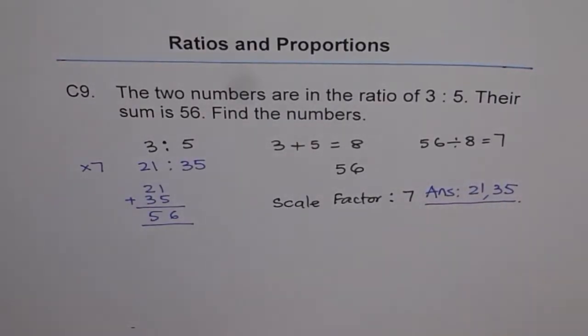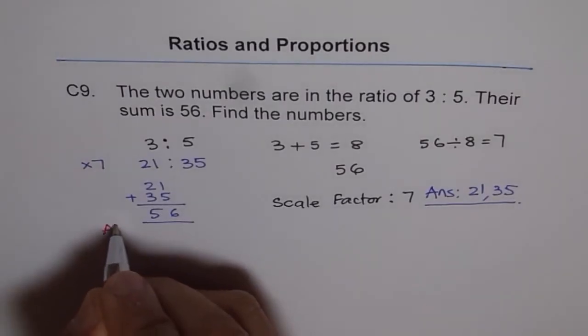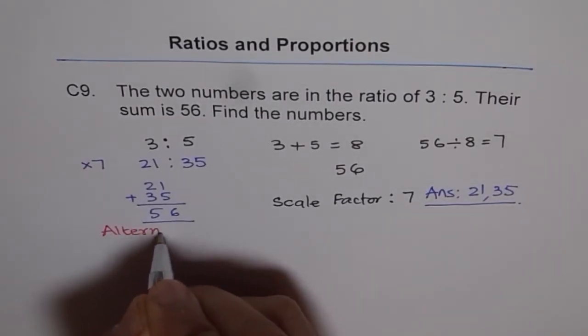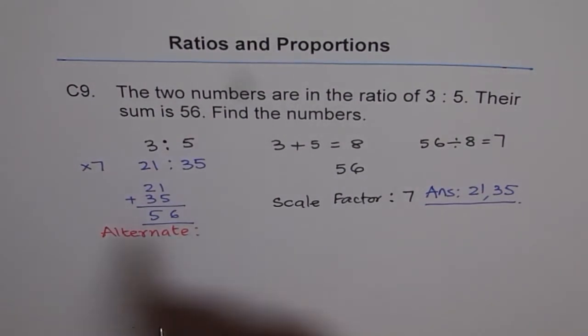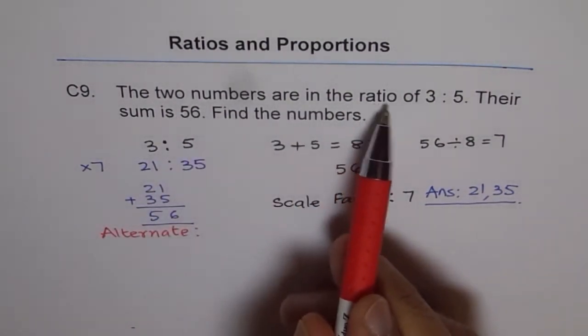So this is one way of solving. Now let me give you an alternate way of solving. Another way of solving the same question would be when we say that the two numbers are in ratio of 3 is to 5.